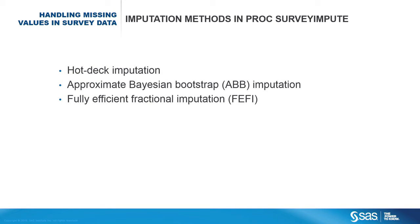Proc SurveyImpute supports several donor-based imputation methods where the missing values in an observation unit are replaced by observed values from other units. You can use Proc SurveyImpute to perform hot-deck imputation, approximate Bayesian bootstrap imputation, and fully efficient fractional imputation.